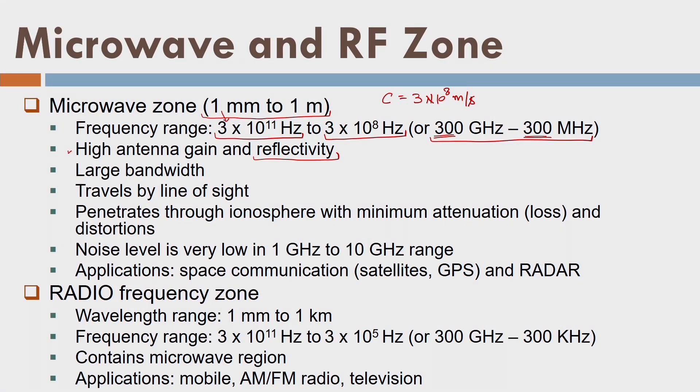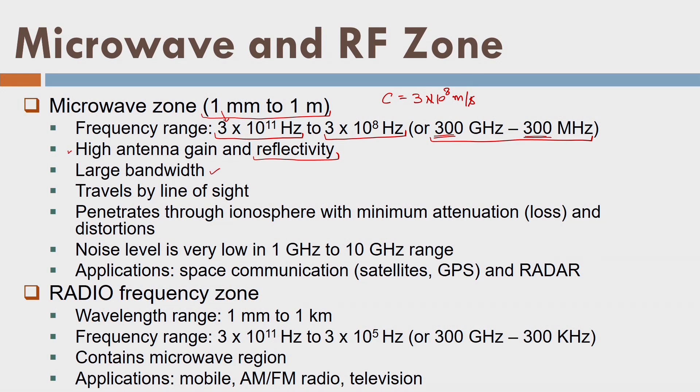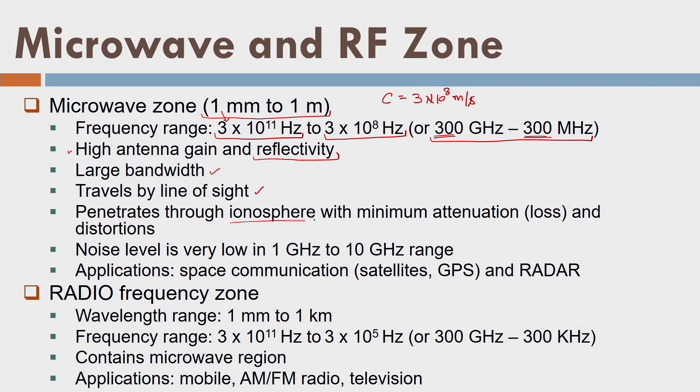Similarly, microwave has higher reflectivity — the surface where the signal reflects also behaves with high reflectivity in the microwave region. It has large bandwidth, meaning the frequency range over which the signal is transmitted is very wide. It travels by line of sight: the radar pulse follows the directed transmission direction. We can take advantage of this for topographic mapping. As already seen, it penetrates through the ionosphere and has minimum attenuation while traveling through the atmosphere or ionosphere.